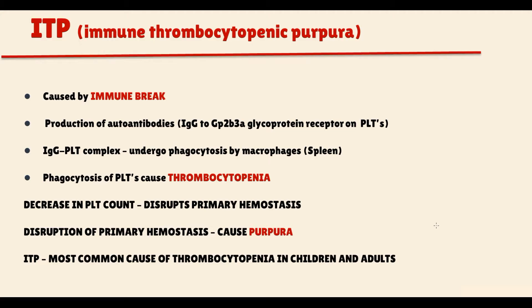Immune thrombocytopenic purpura is a condition where, due to a break in the immune system, organisms begin to produce immunoglobulin G antibodies against platelets. Antibodies are produced against glycoproteins present on the platelet surface, mostly against GP2B3A.